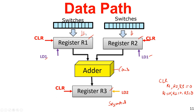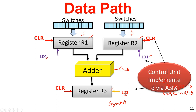Similarly for register R3: the output of the adder gets into register R3 if LD2 (load2 signal) is on. These are the control inputs implemented by ASM — the control inputs for the data path that need to be generated. In this case, control inputs are CLR, LD1, and LD2 — these are the three control inputs we need to generate from our ASM or controller.